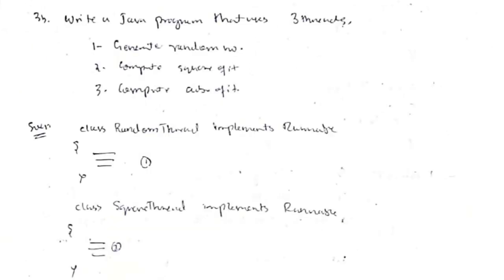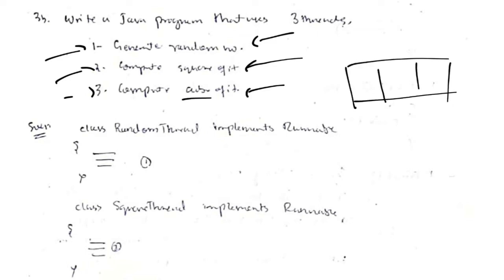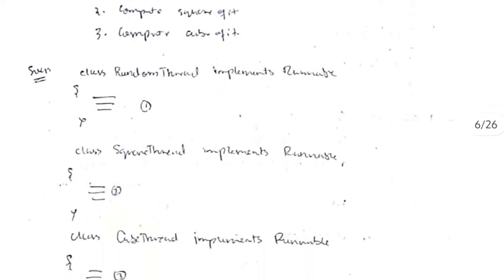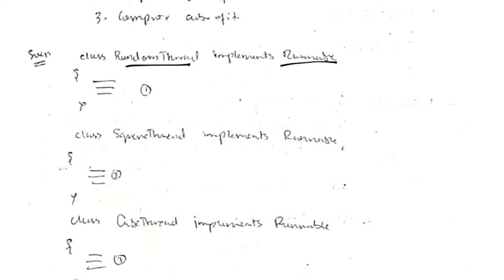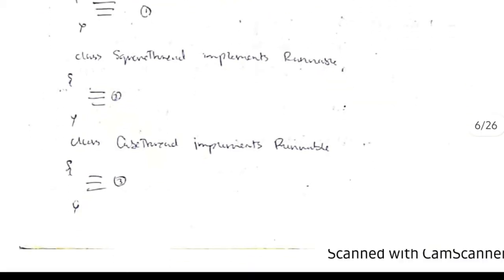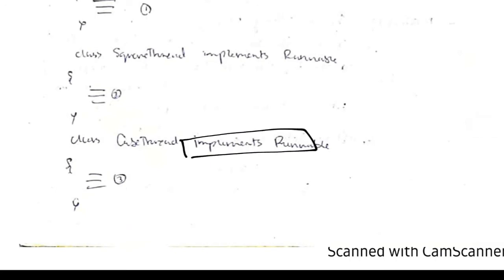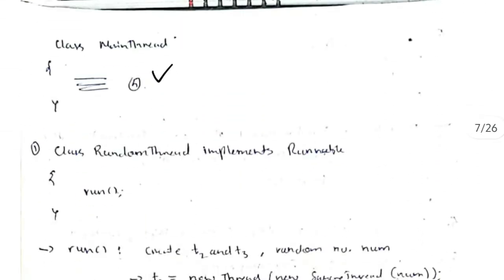Coming to 3b, we write a Java program using multi-threading. We have three classes: one generates a random number, the second finds its square, and the third finds its cube. The three classes run simultaneously. We write: class RandomThread implements Runnable, class SquareThread implements Runnable, and class CubeThread implements Runnable, along with the main function.